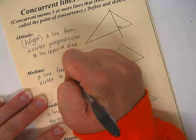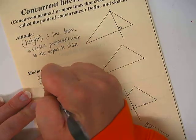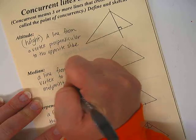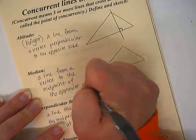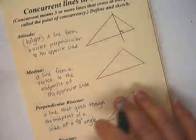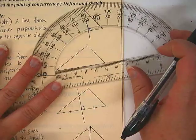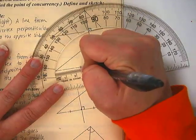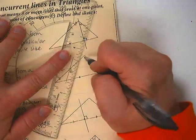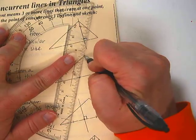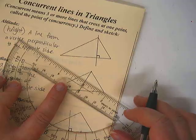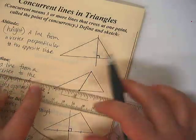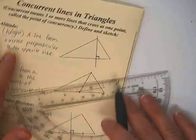A median is a line from a vertex to the midpoint of the opposite side. So I first measure, and I think these triangles are all the same, so it's 5 centimeters, so half would be 2.5. And then you just draw a line from the corner to that midpoint.